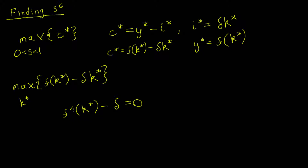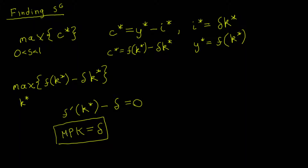The derivative of the production function with respect to capital is also just the marginal product of capital. Moving the depreciation rate to the other side, our first order condition becomes: the marginal product of capital equals the depreciation rate. This will be useful when we analyze the solution graphically.